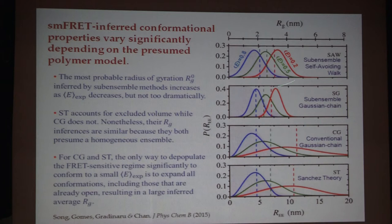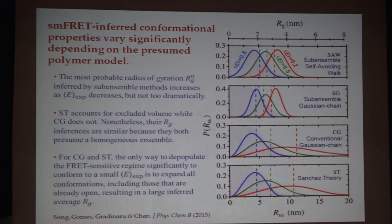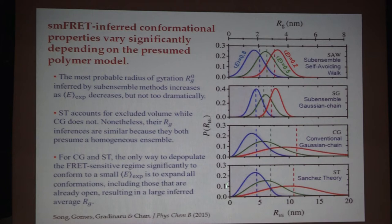But if you use the conventional method, the key is that the tails of the distribution are significant for inferring the end-to-end distance. If you force the whole conformation to be a homopolymer, in order to have a low transfer efficiency you basically have to push the whole thing out. The Sanchez theory does the same thing — you push the whole thing out, ending up with an R_G that is much larger. This only happens because you assume the conformational ensemble is homopolymer-like, but if you do it without this assumption as we have done, this doesn't need to happen. It can have just a very narrow variation of R_G.